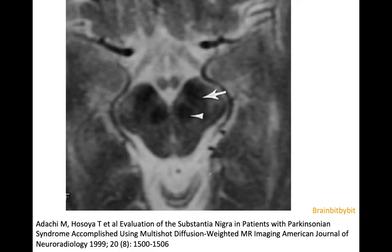Parkinson's disease is caused by loss of dopaminergic neurons in the substantia nigra. The substantia nigra is located in the midbrain, just anterior to the red nucleus.